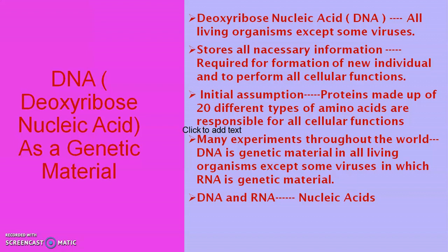Initially it was assumed that proteins, which are made up of 20 different types of amino acids, are responsible for cellular functions or cellular activities. But many scientists throughout the world performed a large number of experiments and experimentally proved that DNA is the genetic material in all living organisms except some viruses, in which the genetic material is RNA. Both DNA as well as RNA are nucleic acids.